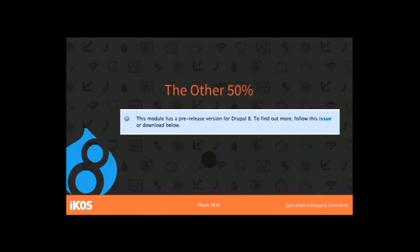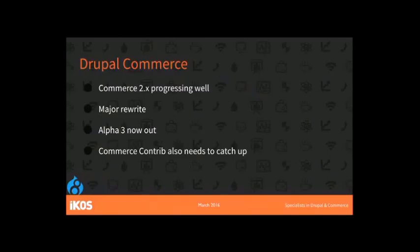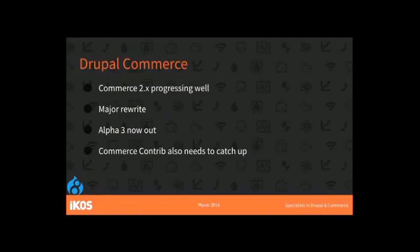Looking at the important ones — something like Drupal Commerce. We do lots of work in Drupal Commerce at ICOS. There is a new version, Drupal Commerce 2, which has been completely rewritten for Drupal 8, and that's now at Alpha 3. When I first did this talk it wasn't even on the horizon. So we're a significant step further along. But Drupal Commerce also has its own mini-ecosystem of plugins — payment gateways, coupons — and all of that also needs to catch up.